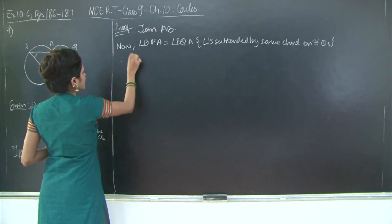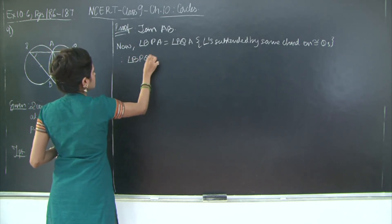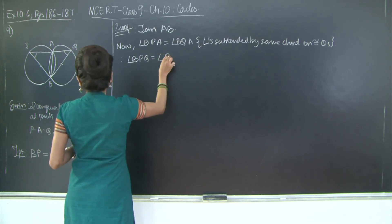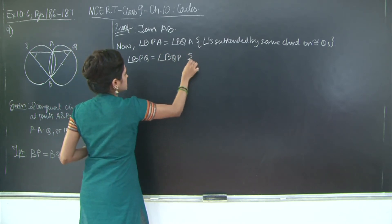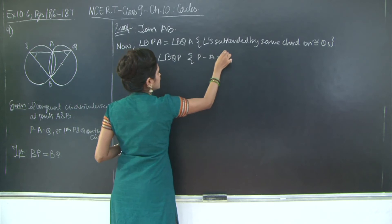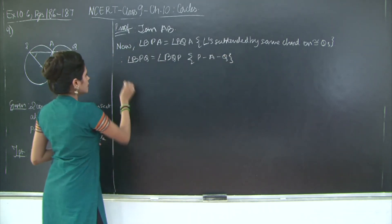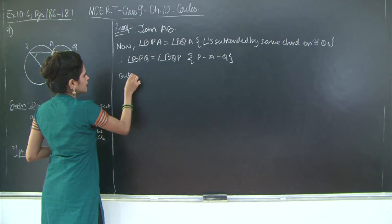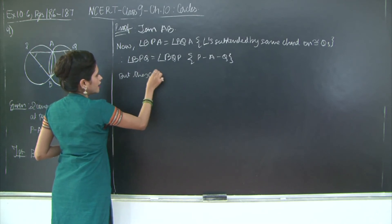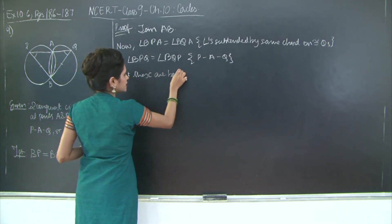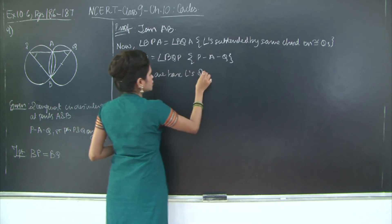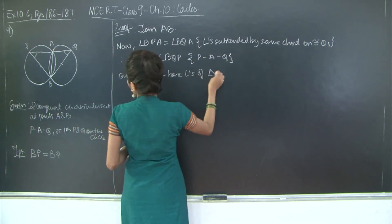Therefore this implies angle BPQ is equal to angle BQP since A lies on the line segment PQ. But these are base angles of triangle BPQ.